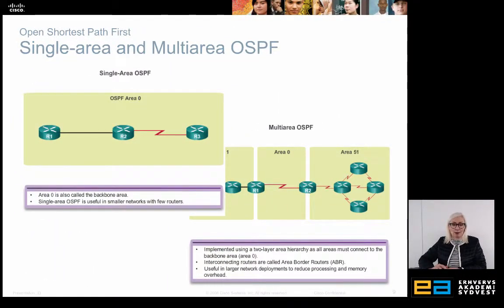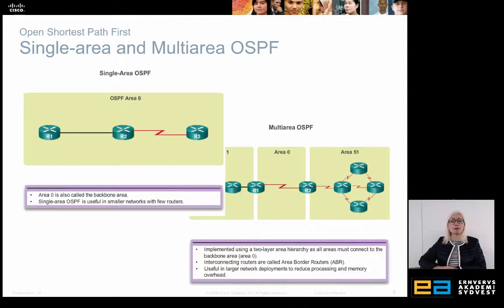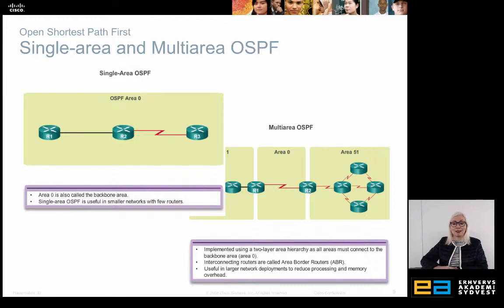We can have two different types of OSPF. First is single-area OSPF, where we only have one area and everything is routed within that area. We can also have multi-area OSPF for very large networks where we want to segment the network. There is, for instance, area 0, which is the backbone area that connects all other areas. We will cover multi-area OSPF in more detail next week.